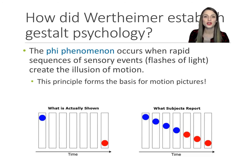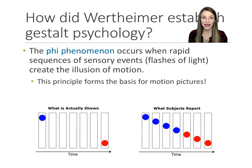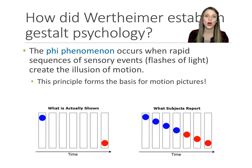Film, motion pictures, movies — everything we watch on Netflix, everything we watch on our phones — is based on this human tendency to take two images placed back-to-back very quickly and fill in the missing pieces. Even as you're watching this video, you're actually watching thousands and thousands of still images shown right after one another.